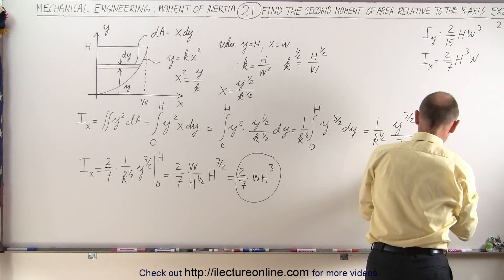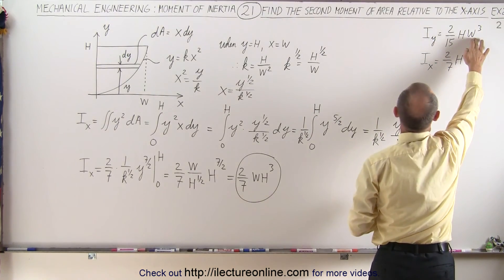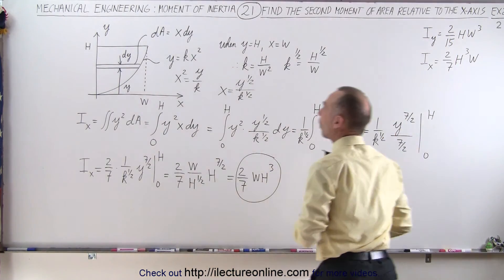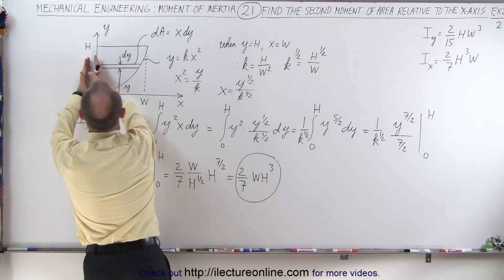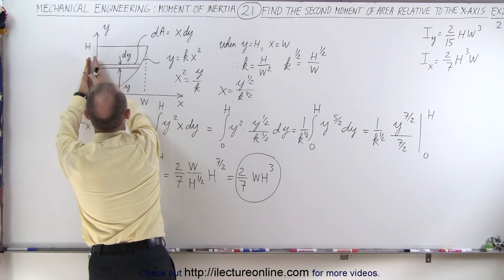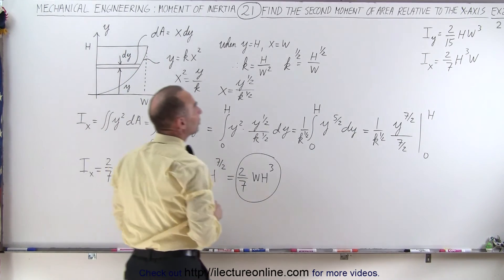So notice the difference in the answers. Here we have w cubed in respect to the y-axis, because it depends how far things are away from the y-axis in this direction, so we have a w cubed.